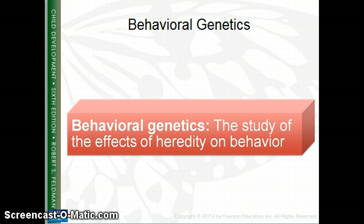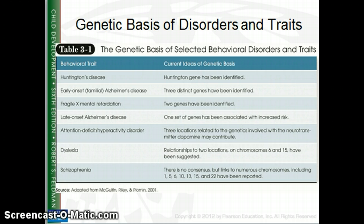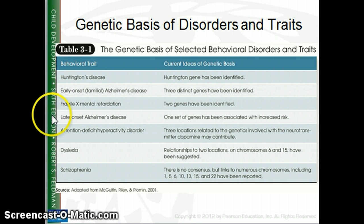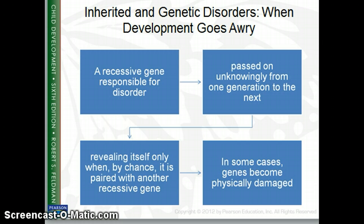Behavioral genetics looks at how heredity affects our behavior, and it turns out a lot more of our behavior is biologically based than was once thought. Diseases and disorders now considered to be genetically linked include Huntington's disease, early onset Alzheimer's, fragile X, late onset Alzheimer's, ADHD, dyslexia, and schizophrenia. Sometimes recessive genes can cause a disorder when paired with another recessive gene, meaning both parents may carry a recessive gene.